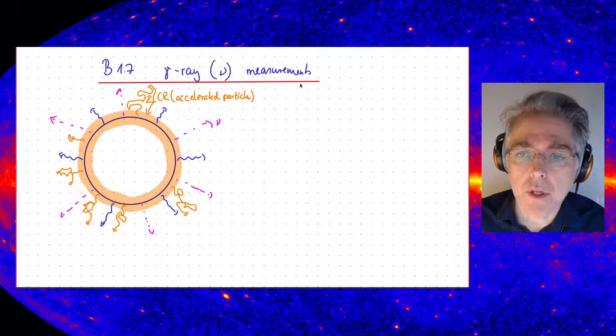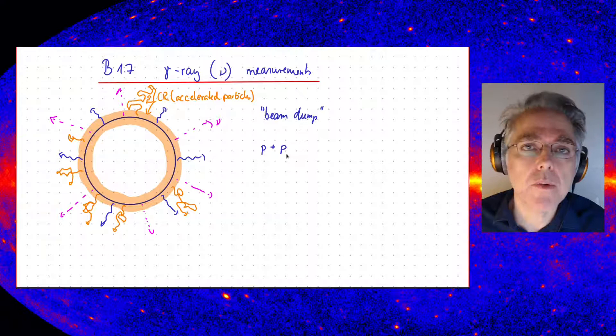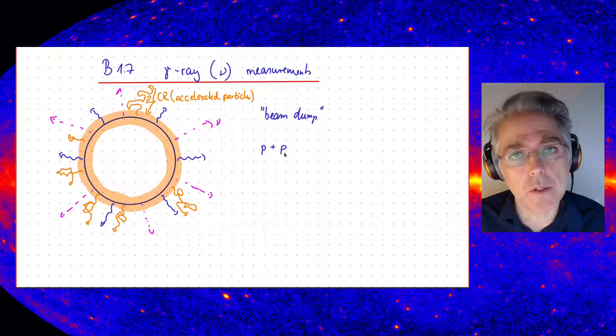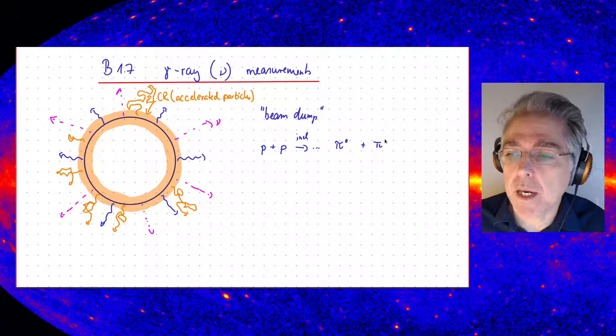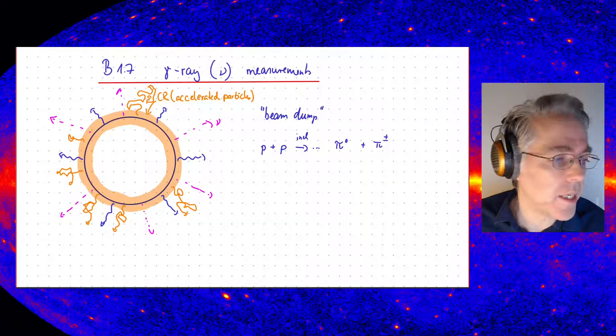It's essentially like a beam dump. We will have interactions where a proton — or heavier nuclei, but I just write the proton because it's the most abundant — will interact with the proton of the background gas. That could be either in the vicinity of the supernova remnant, or actually also further out where you have dense clouds of gas. There will just be the background gas which this will interact with, and this will be then inelastic scattering processes. We will very likely produce pions and maybe other mesons.